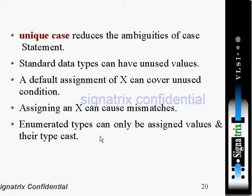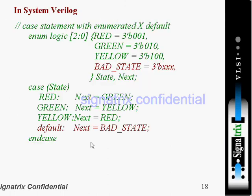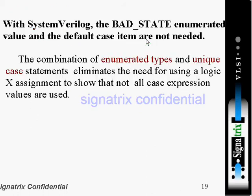The last point is that enumerated types can only be assigned values within their type and their typecast. So we are using that data type and their values.